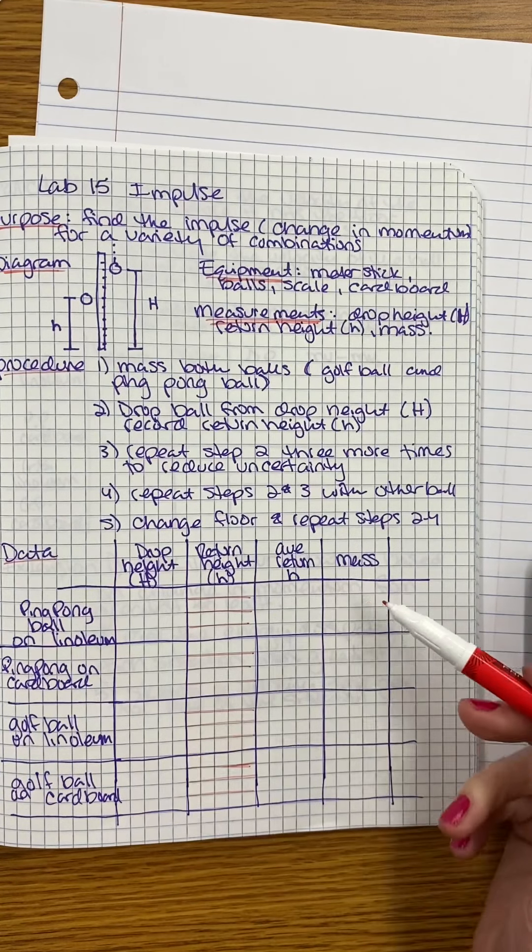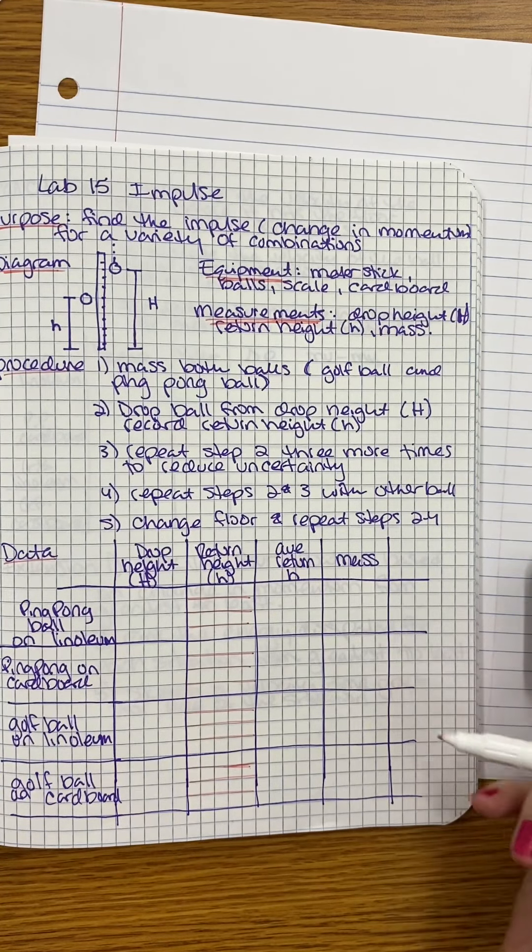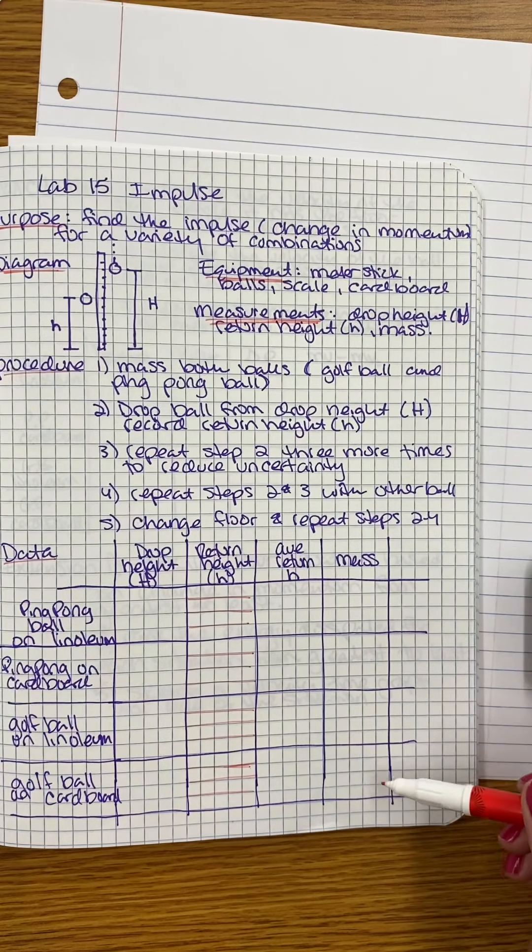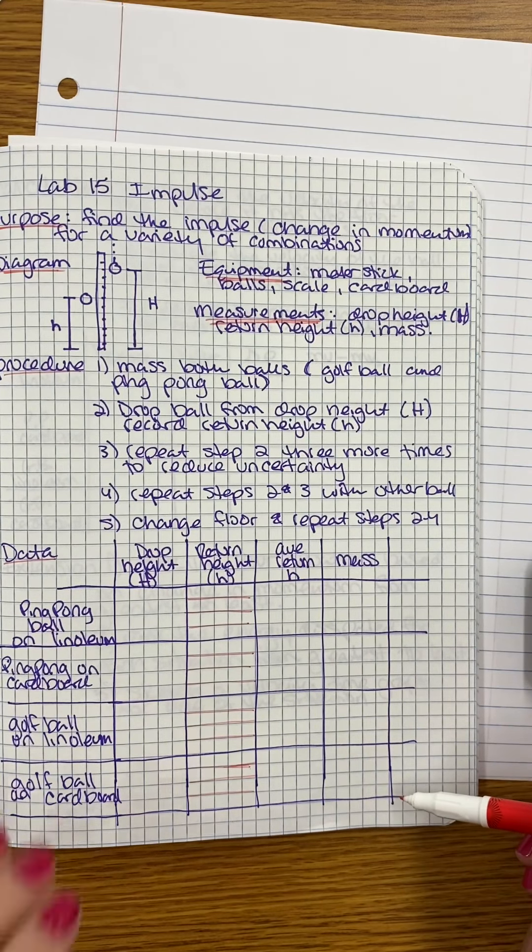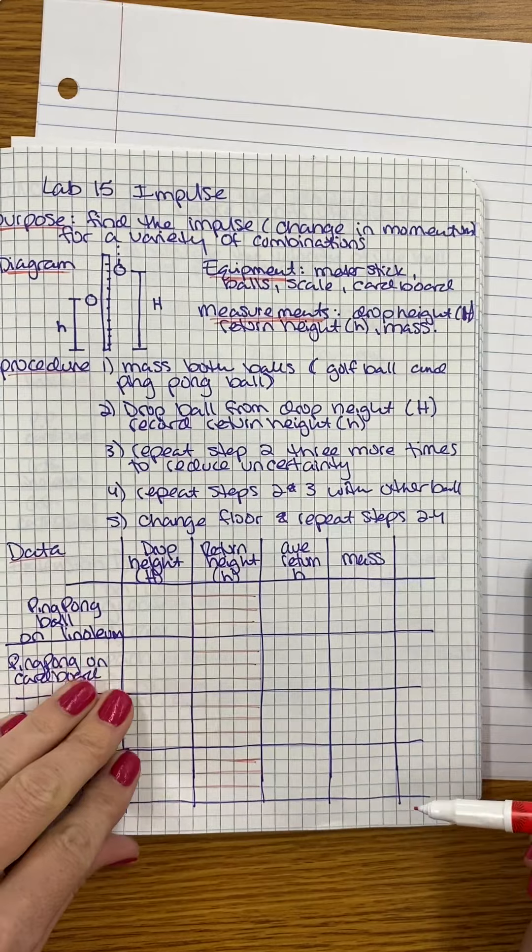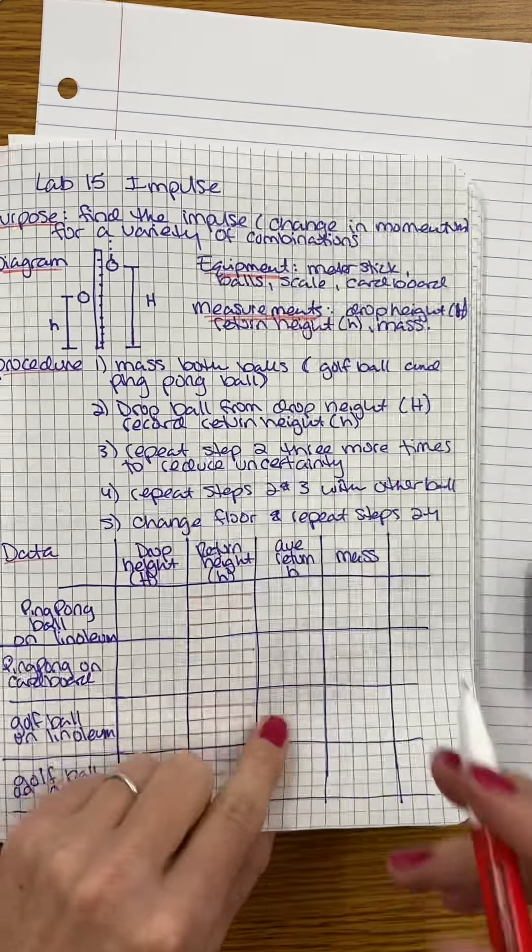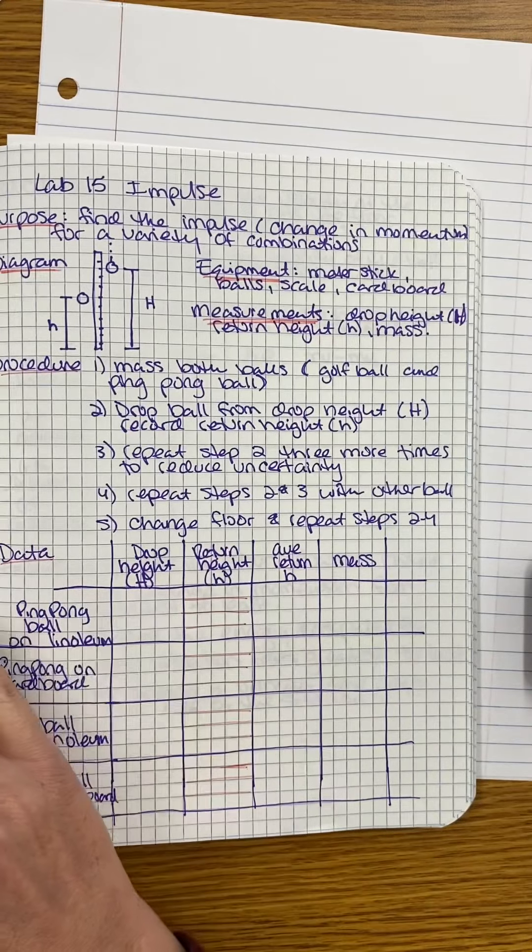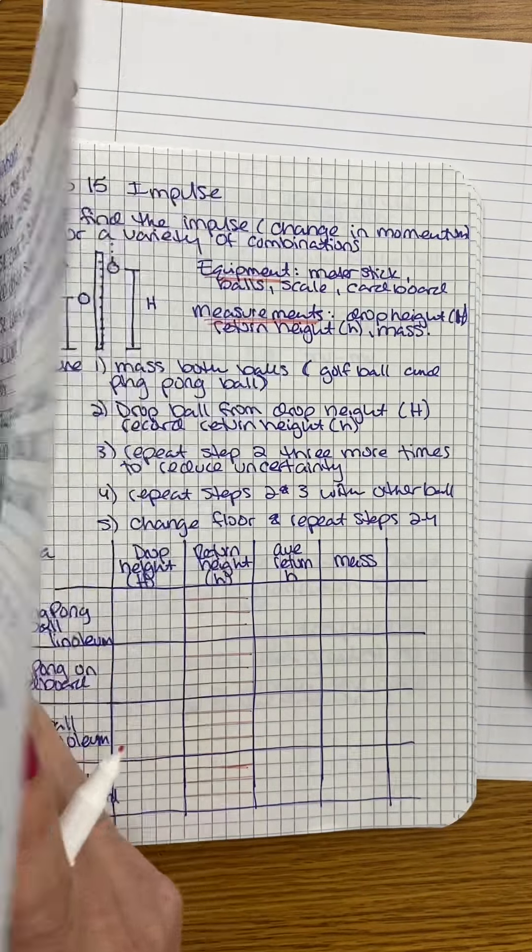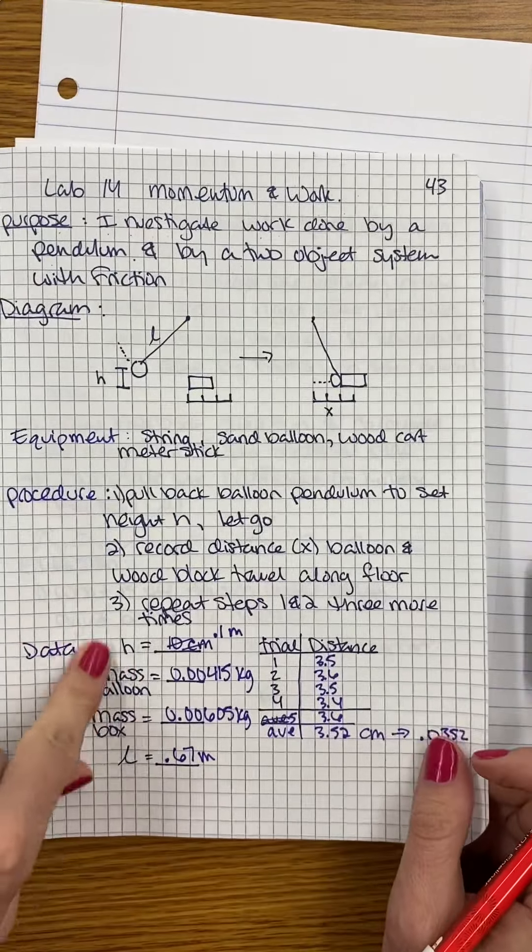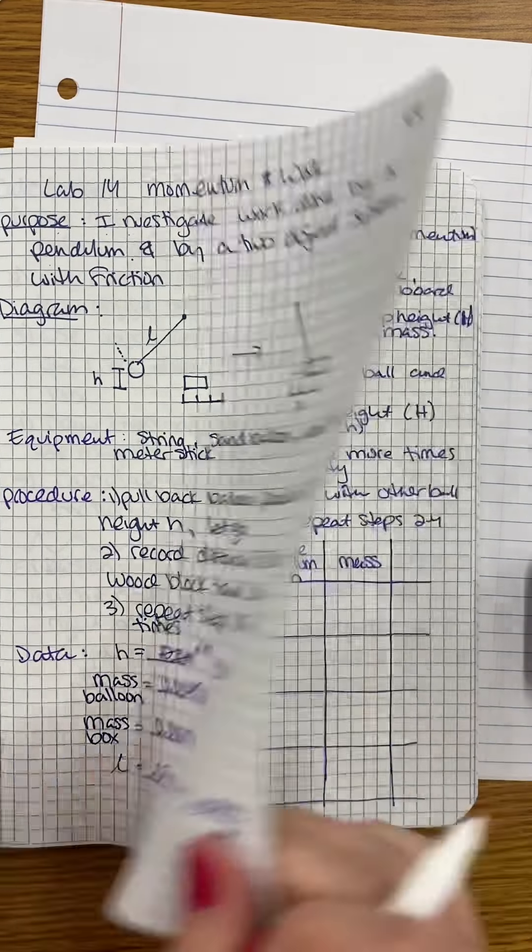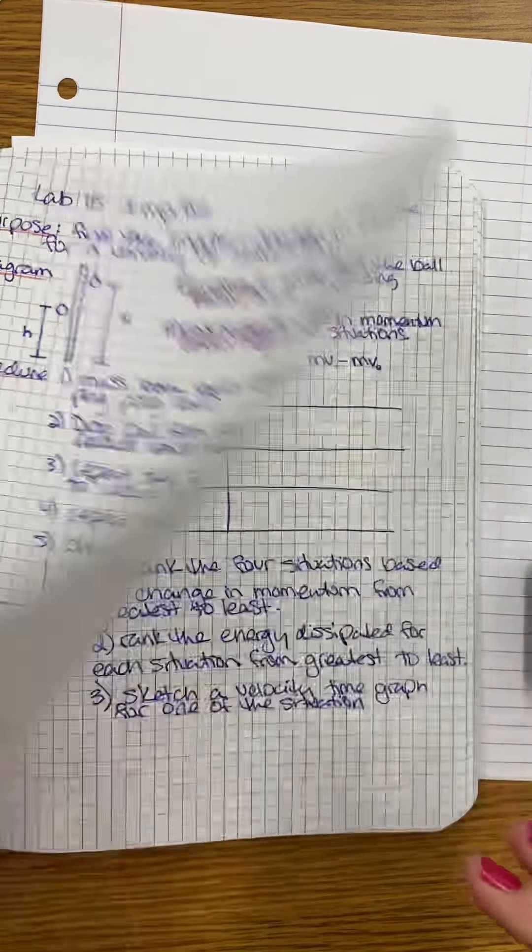We also need the mass. So the mass of the ping pong ball, right? This should be the same. The mass of the golf ball, this should be the same. This is all the data we need. If you don't want to make such a large table, you could just put the mass like off to the side like we sometimes do. Like this. If you want to just make a list like this, you could do it like that too.